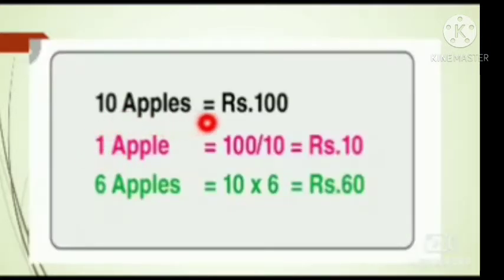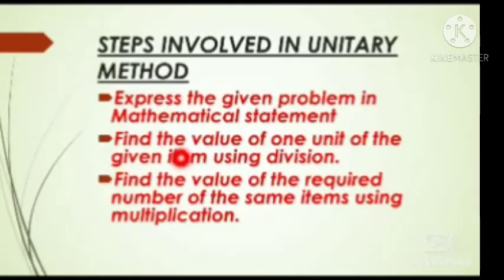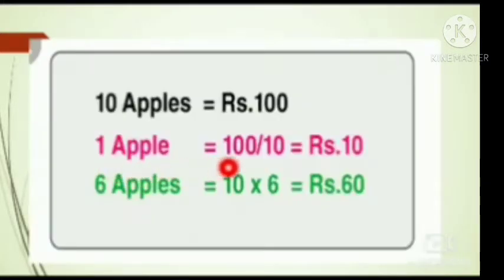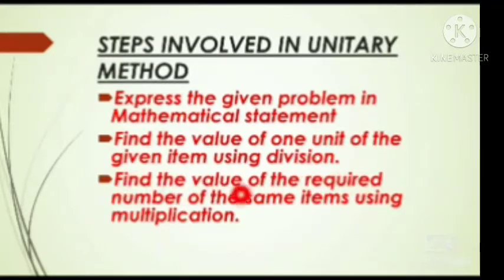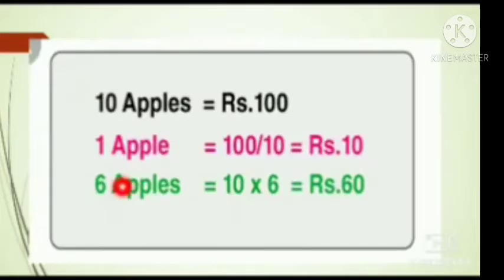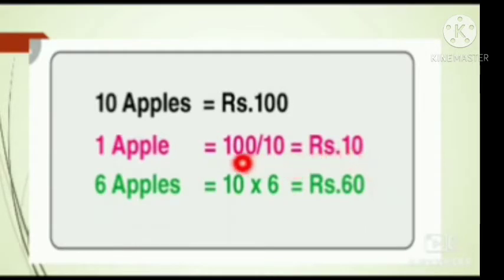For example, 10 apples cost rupees 100. The mathematical statement: 10 apples = rupees 100. To find the cost of 1 apple, divide: 100 by 10 = rupees 10. So the cost of 1 apple is rupees 10. To find the cost of 6 apples: 1 apple = 10 rupees, so 6 apples = 10 into 6 = rupees 60. First find the one unit value by division, then find the required number using multiplication.